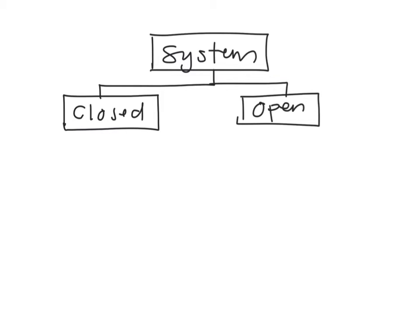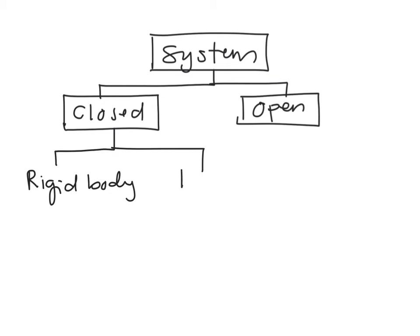In a closed system, you have two types. One is a rigid body, and the other one is your piston — we name it as moving boundary work.